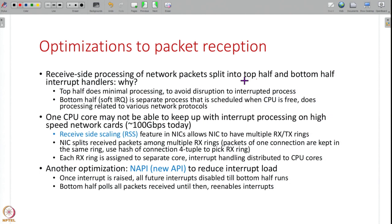One technique is splitting interrupt processing into a top half and a bottom half. When a packet arrives and an interrupt is raised, you are stopping an existing running process, so you want to minimize time. The top half does only the bare minimum — acknowledging the interrupt. Then a separate process whose only job is running bottom-half interrupt handlers is scheduled; when the CPU is free, this runs and does all the protocol-related processing, taking the SKB from the RX ring to the socket's RX queue.